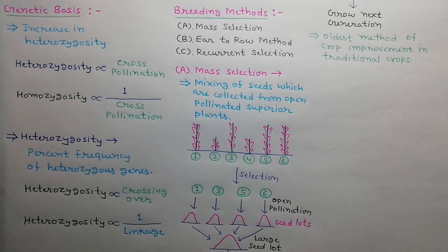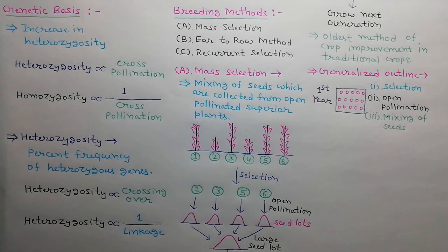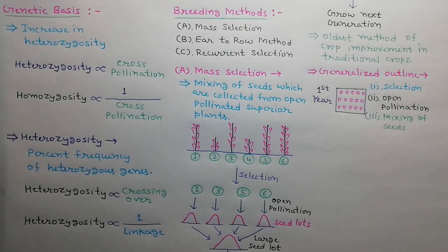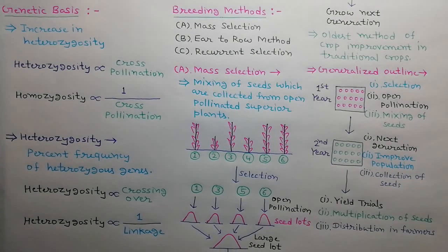Mass selection is the oldest method of improvement in traditional crops. In the generalized outline: in the first year, 200 to 500 superior plants are selected from a genetically variable population; open pollination is allowed; seeds from selected plants are collected and mixed as a mass. In the second year, the next generation is grown from this mass of seeds, called the improved population. Seeds are collected, yield trials are performed, seeds are multiplied, and finally distributed to farmers.